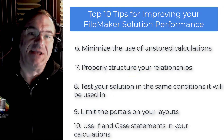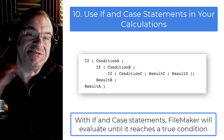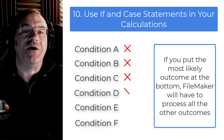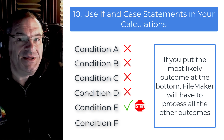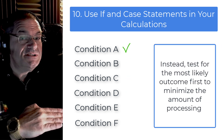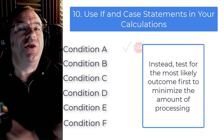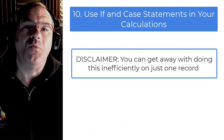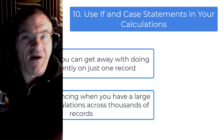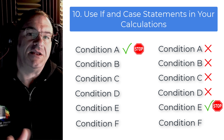If you're writing a calculation, use if statements and case statements efficiently. FileMaker evaluates conditions until it gets to a true condition and then stops. So if you put the most likely outcome at the bottom, FileMaker will process every possibility before getting to the correct answer. If you know what the most likely outcome is, test for that first — at the top. That allows FileMaker to begin calculating, get the correct answer, and stop. This matters most when you have to display summary information or calculated totals across a found set, and FileMaker has to do that calculation 5,000 times.